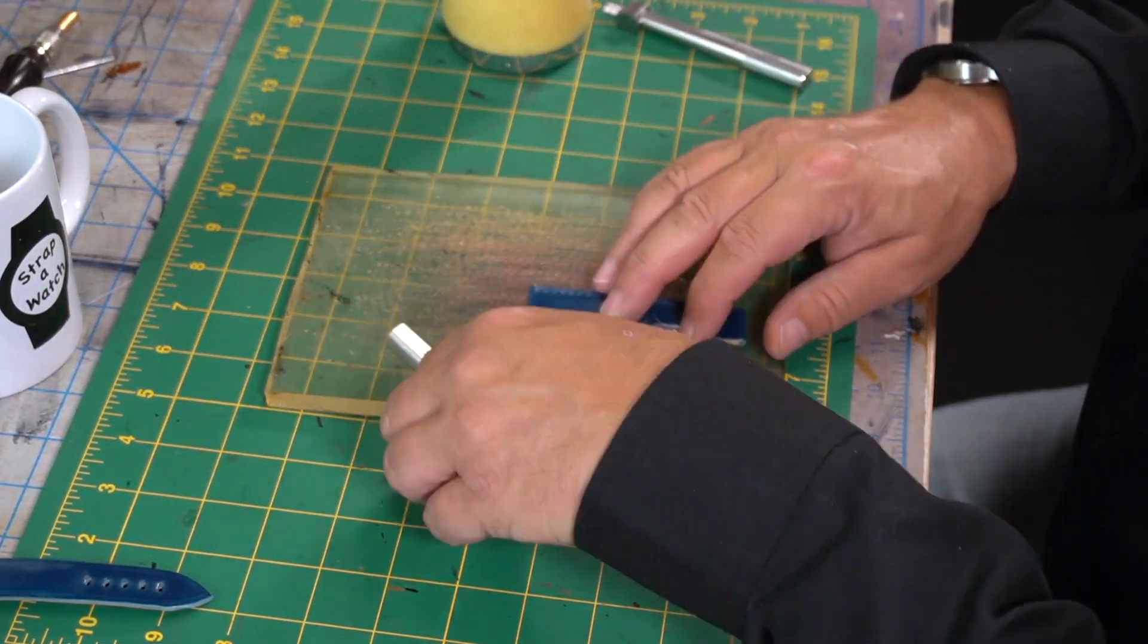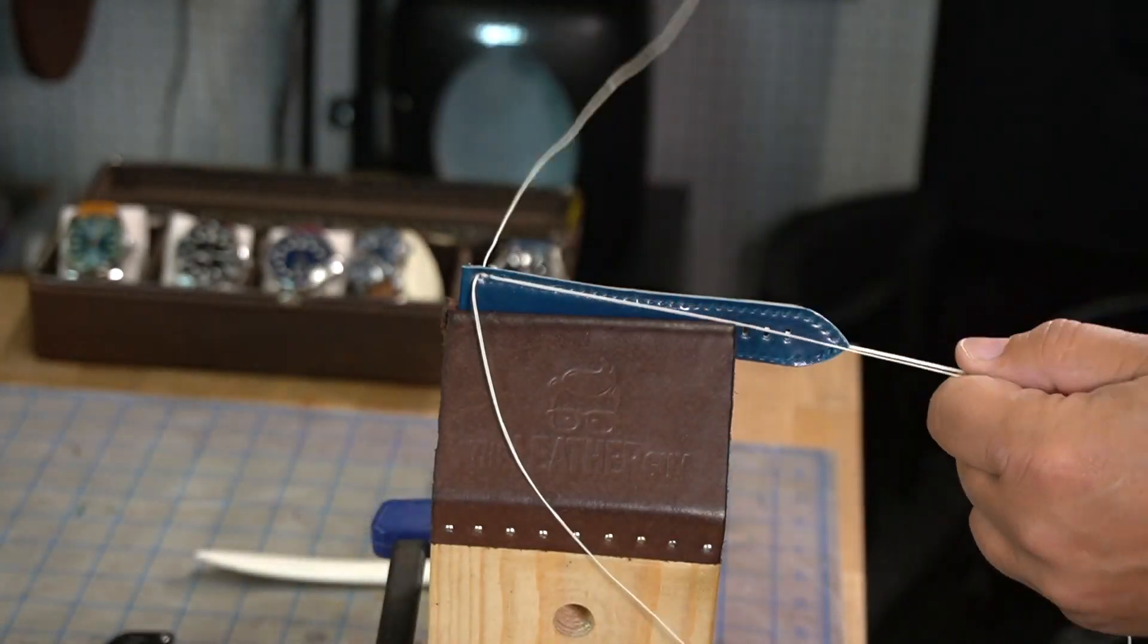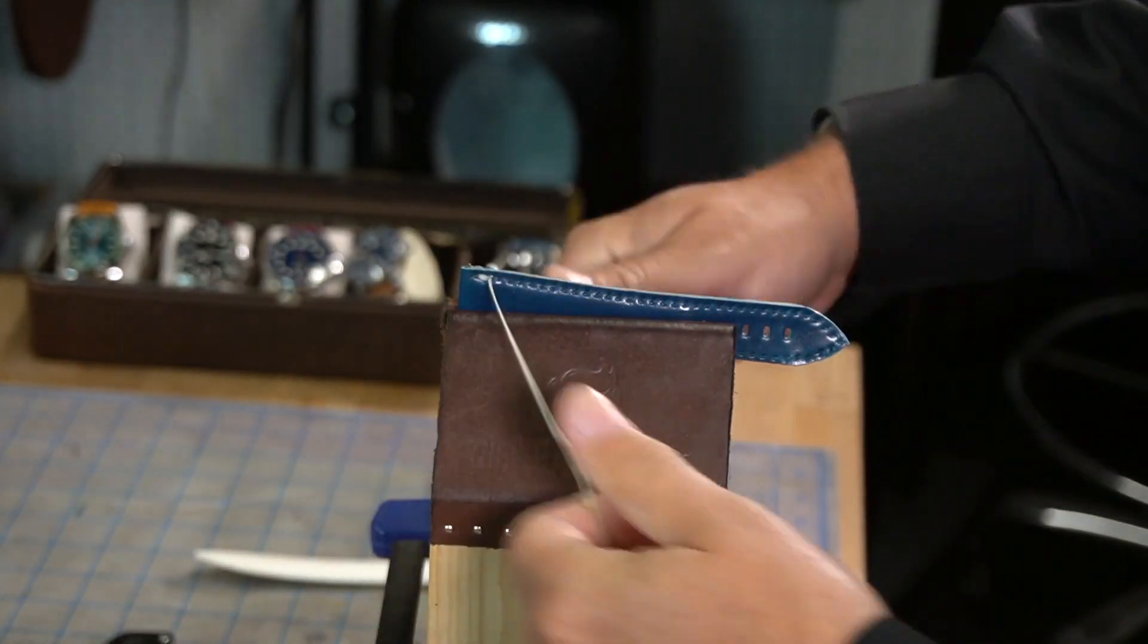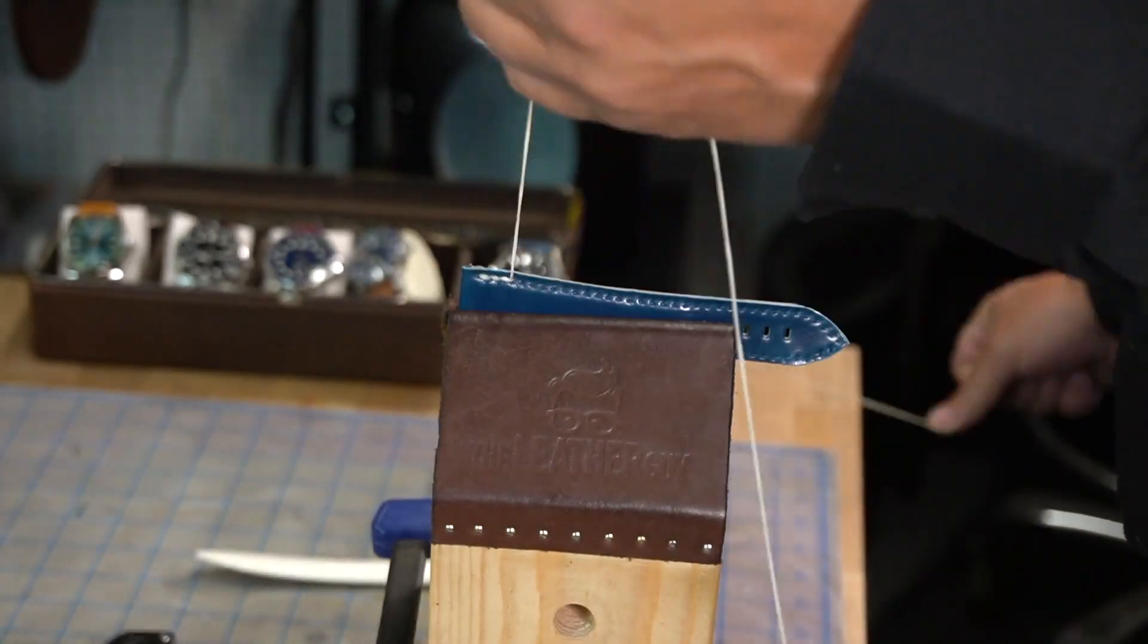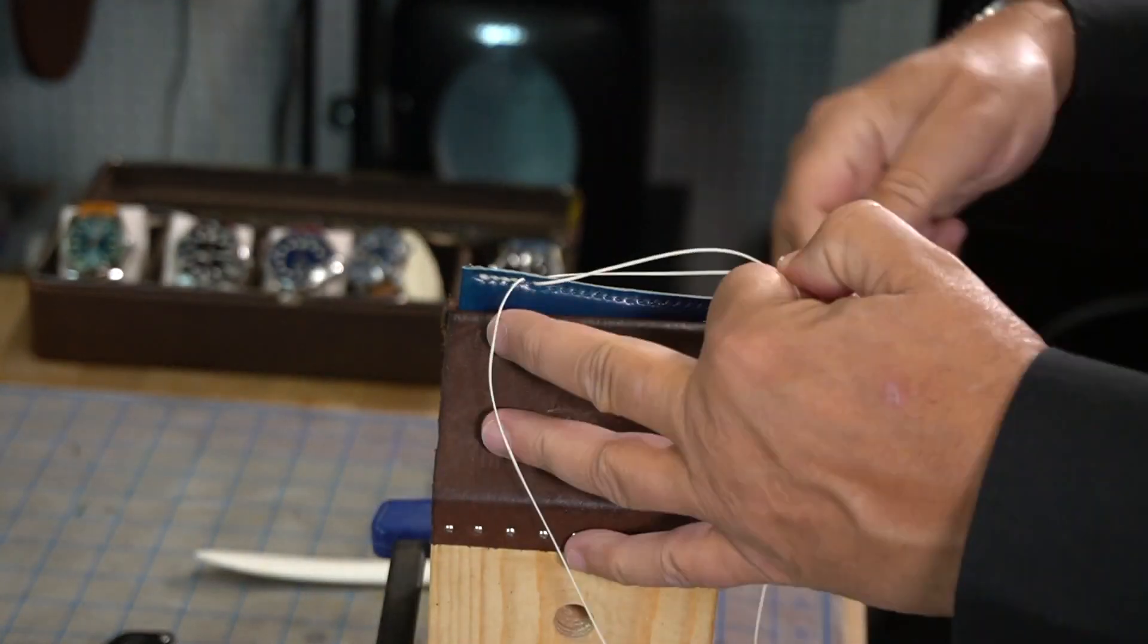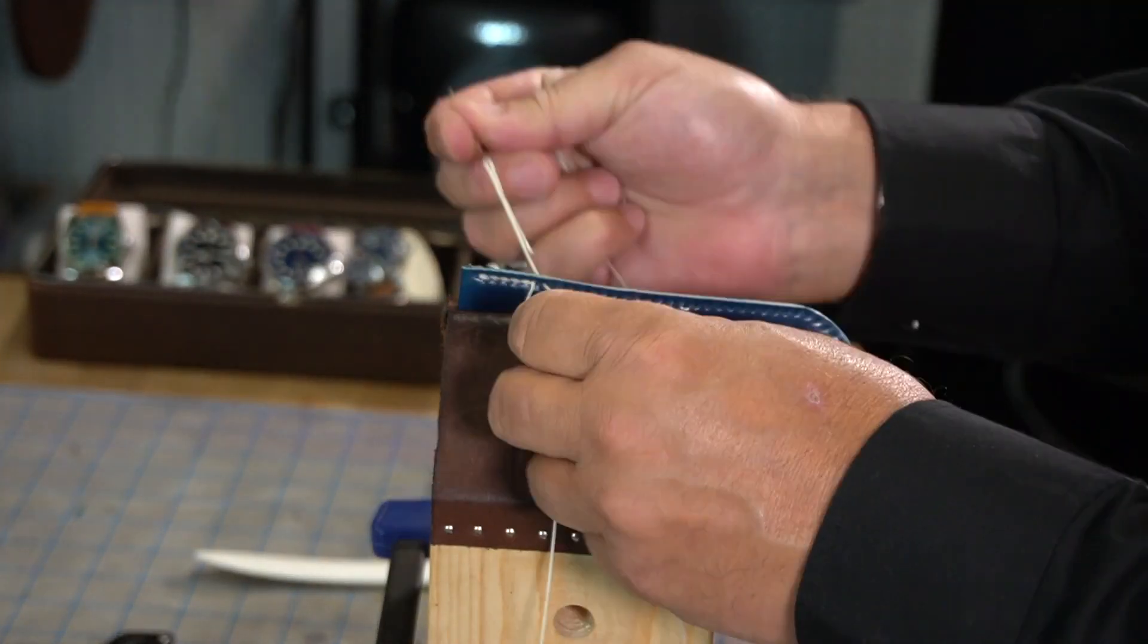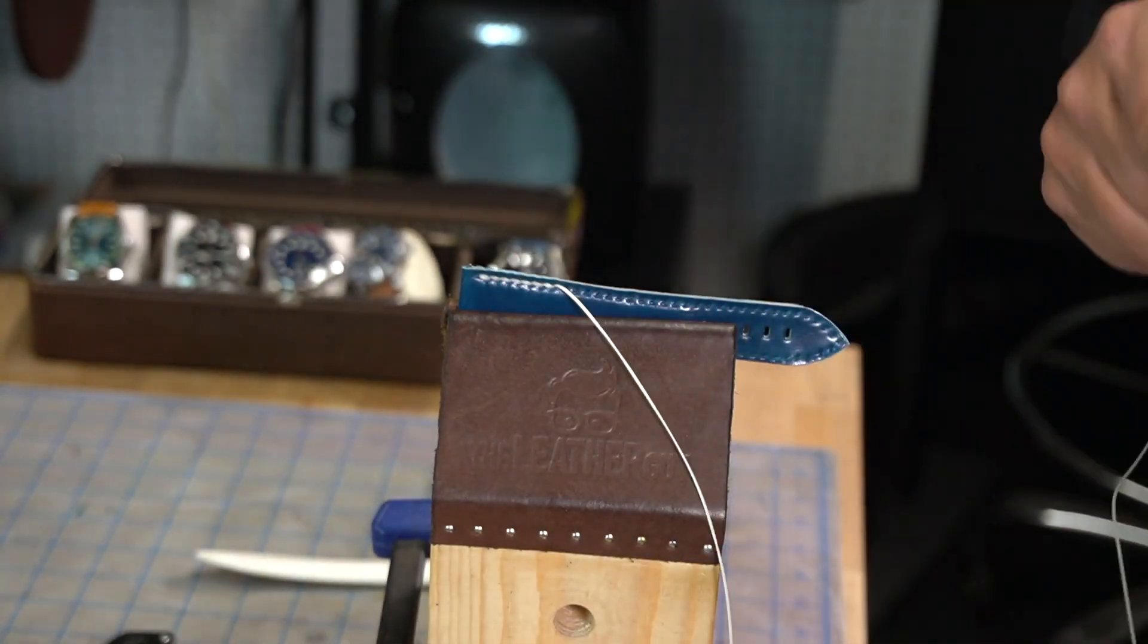And that's what's so cool about especially quick release lug pins. It's kind of my motto that one watch can become multiple watches with various straps. And that's regardless if it's a rubber strap, a NATO strap, a bracelet, you know, leather straps, various kinds of leather straps, colors. You can have one watch and change out your watch strap every day and it's like it's a different watch. It's really cool.